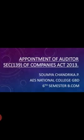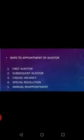There are many ways to appointing an auditor. The ways are: Appointment of First Auditor, Appointment of Subsequent Auditor, Appointment in the case of Casual Vacancies, Appointment by Special Resolution, and Appointment through Annual Reappointment.